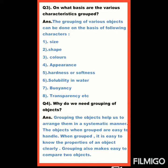Question 4: Why do we need grouping of objects? Grouping the object helps us to arrange them in a systematic manner — अगर हम किसी object की grouping करते हैं तो उसको systematic manner में arrange कर सकते हो। The objects when grouped are easy to handle — जब object group में present हैं तो उसको easily handle कर सकते हो। When grouped, it is easy to know the properties of an object clearly।